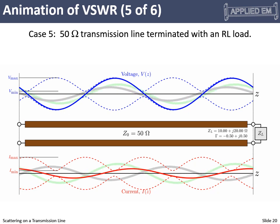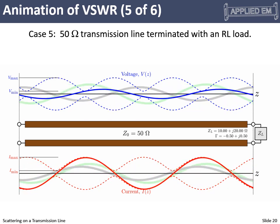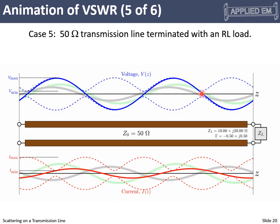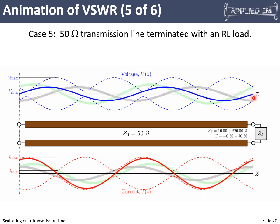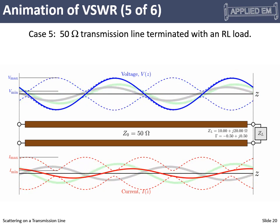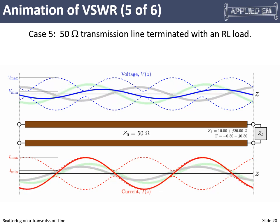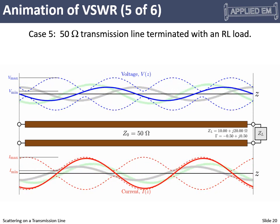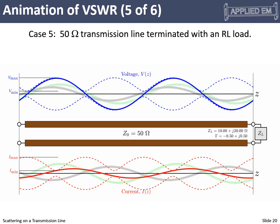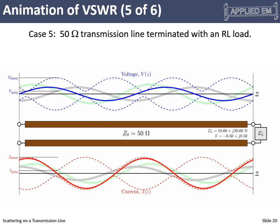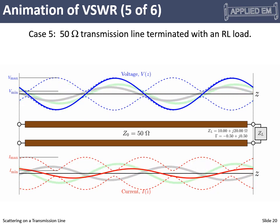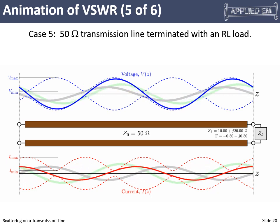Now let's look at a complex load — one that has both resistance and reactance. Almost all properties of the standing waves are the same: minimums of voltage still correspond to maximums of current and vice versa. The main change is that we don't terminate at the load with a minimum or maximum — it's somewhere in between. The impedance of the load shifts the position of our standing wave and affects its severity by how strong the reflected wave is. Minimums of E correspond to maximums of I, maximums of E correspond to minimums of I, repeating every half wavelength, with a quarter wavelength between a node and an antinode.